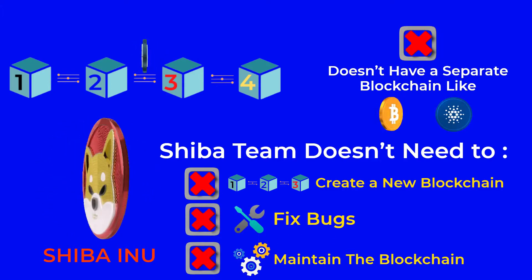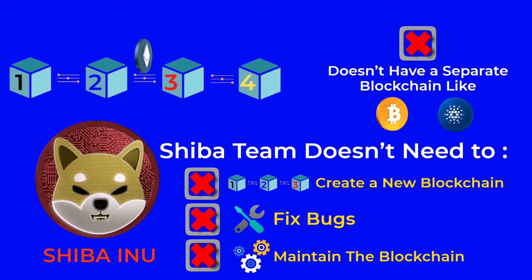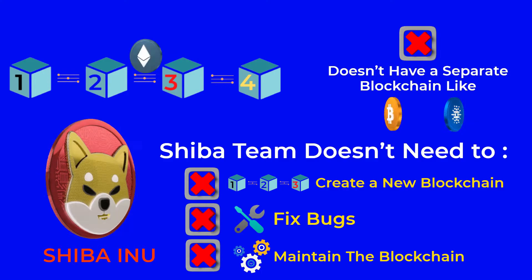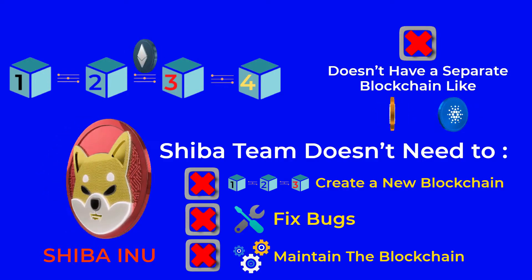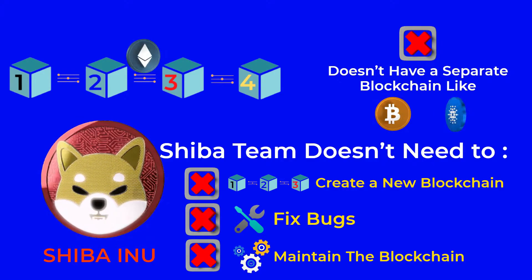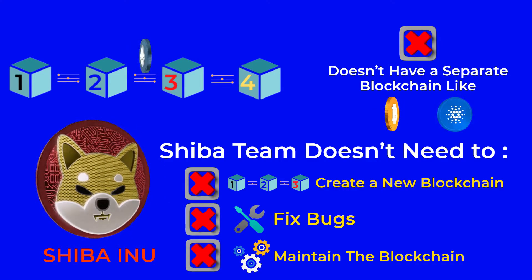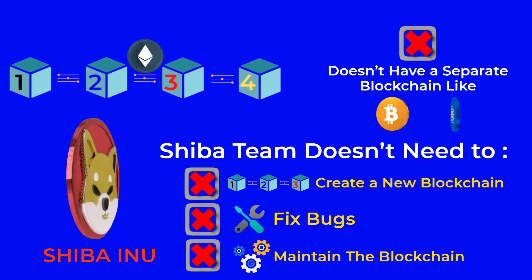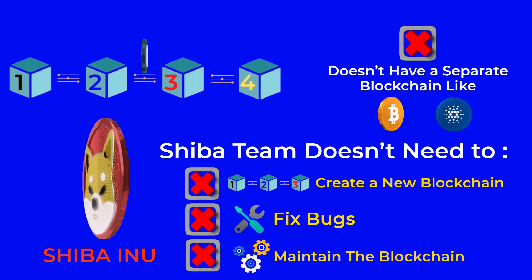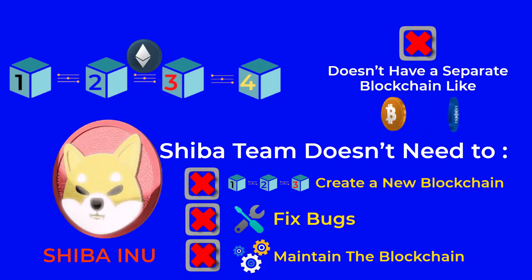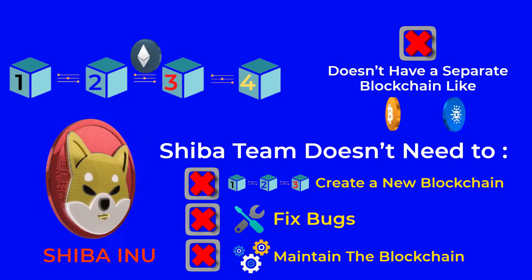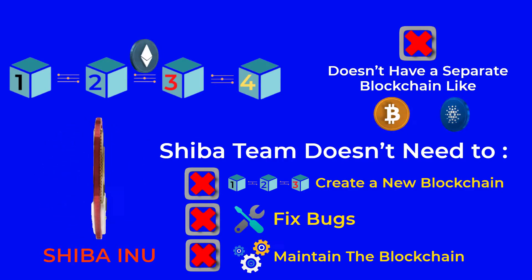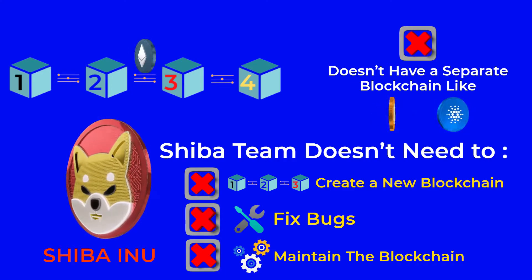The Shiba Inu team doesn't have to worry about creating a new blockchain, fixing bugs, or maintaining anything at all. They just write small pieces of code and use the Ethereum blockchain as the infrastructure for their token, which makes it very easy for anyone to create their own token, even without any technical knowledge.